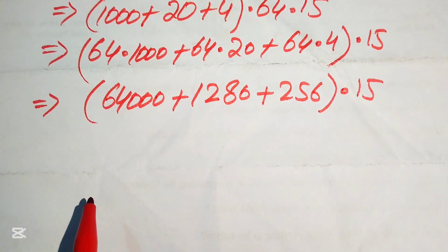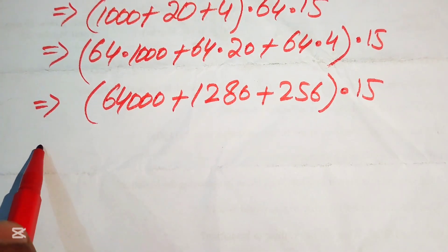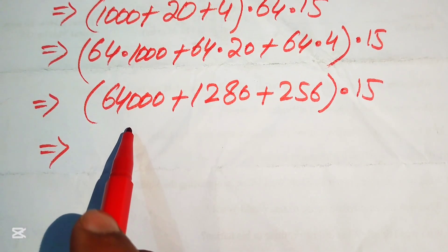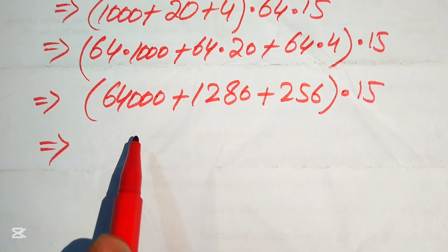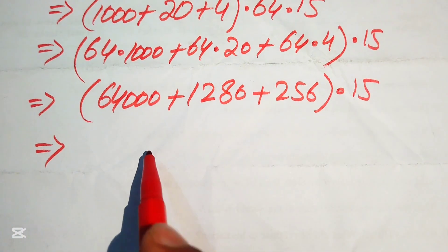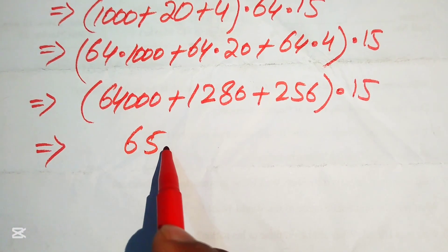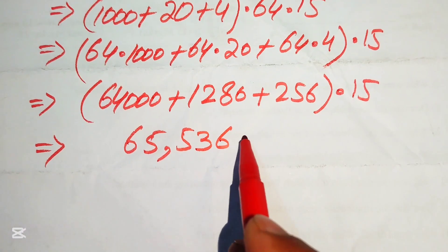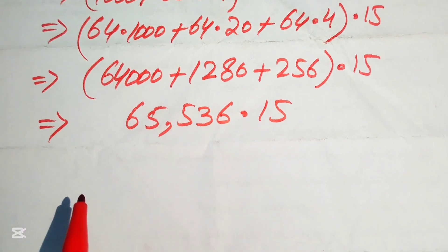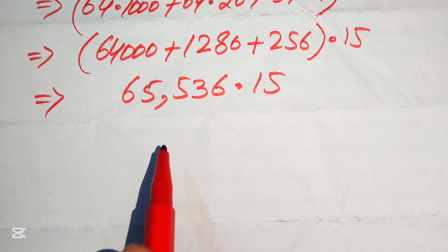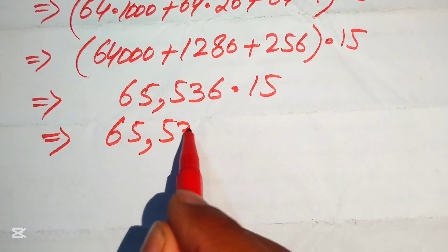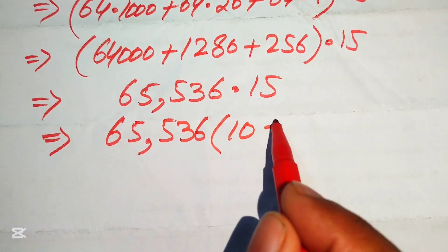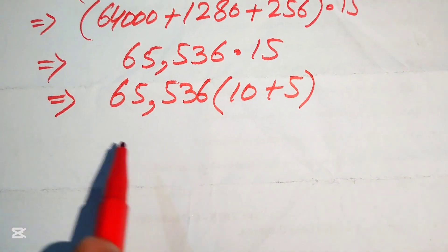We sum all these values using traditional addition: 64,000 plus 1,280 plus 256 equals 65,536, multiplied by 15. To multiply 65,536 by 15, we write 15 as 10 plus 5 and distribute: 65,536 times 10 gives 655,360.